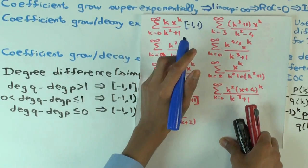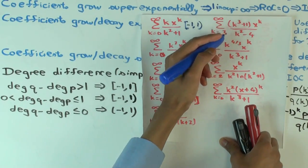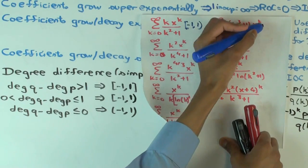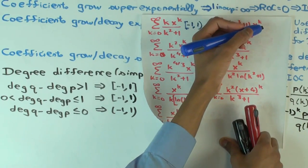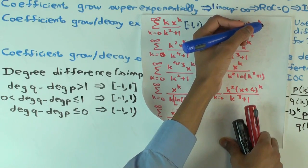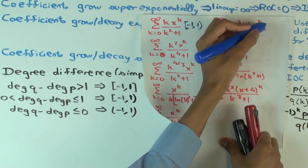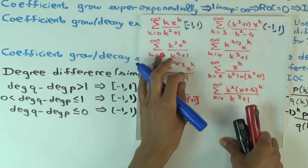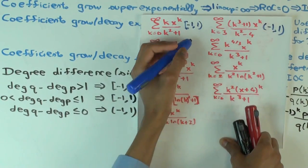The next example: what's the degree difference? Negative one — the numerator is actually going faster. So the degree difference is zero or negative, meaning it's both open: the interval is open negative one to one.